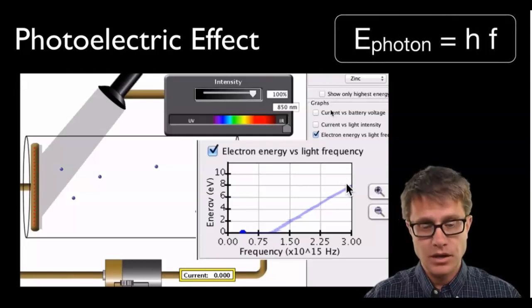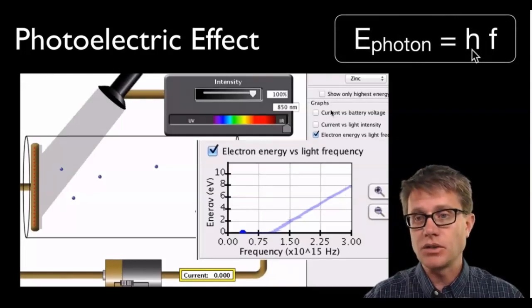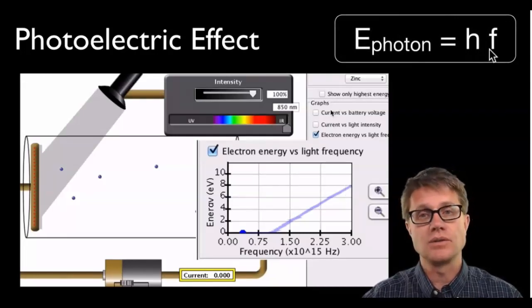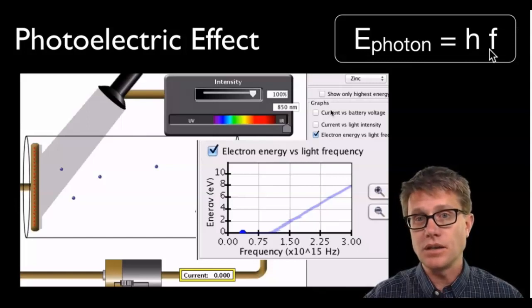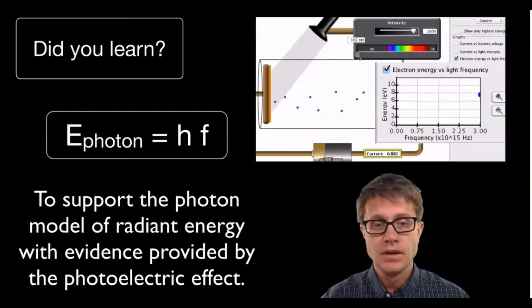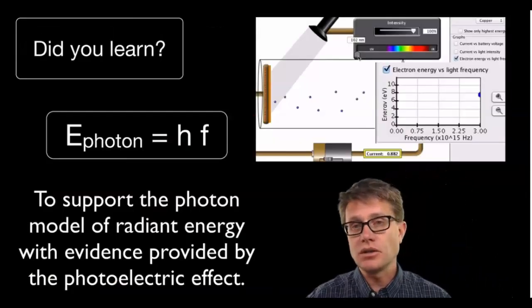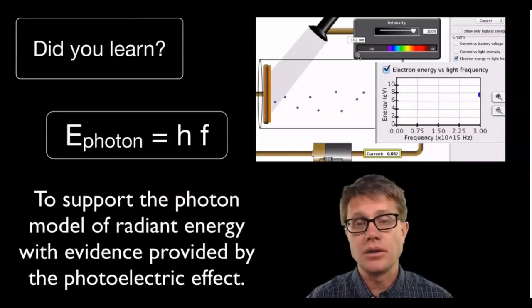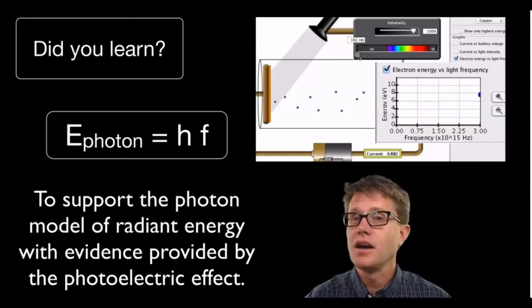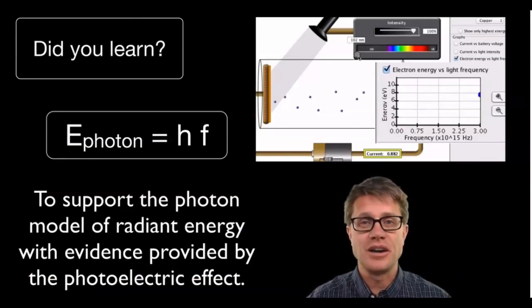So this is our formula: the energy of a photon is Planck's constant times the frequency. As we increase the frequency, we increase the energy. I hope that helped you learn to support the photon theory using the photoelectric effect.